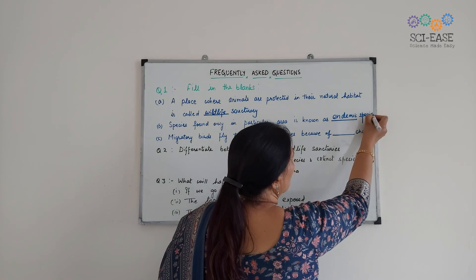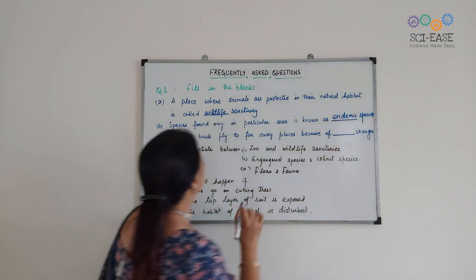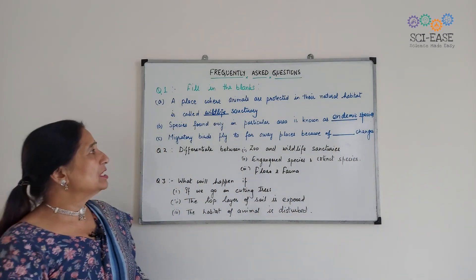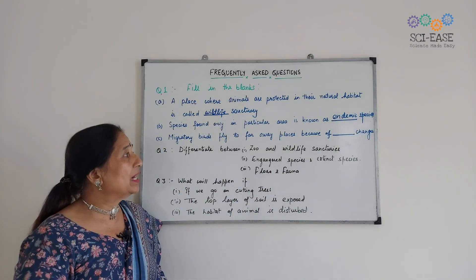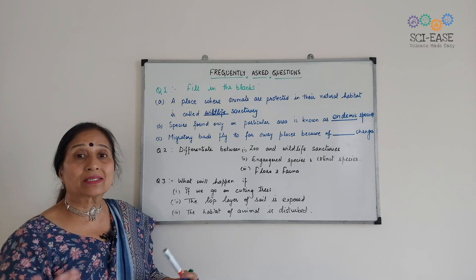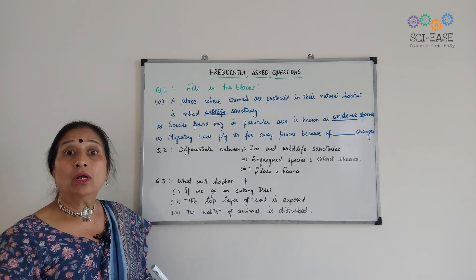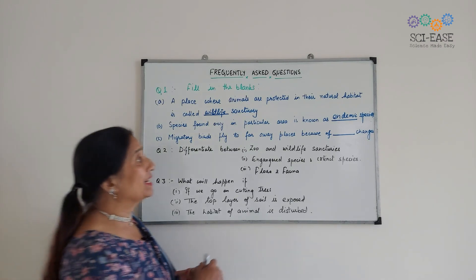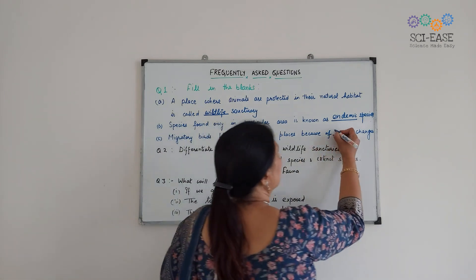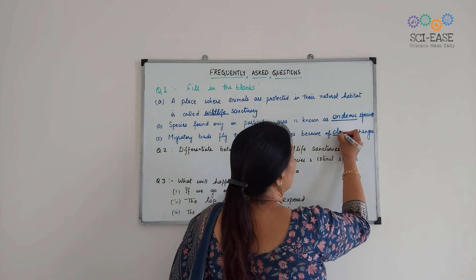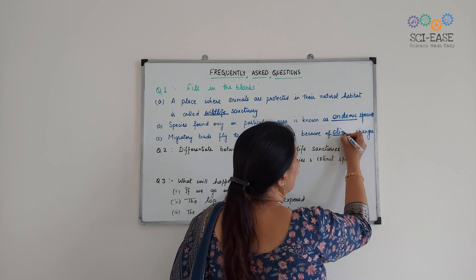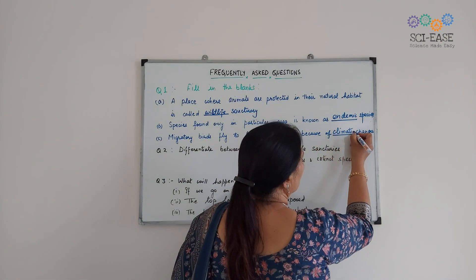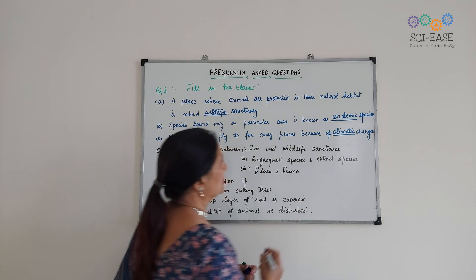Next one — migratory birds fly to far away places. Why do they go to far away places? Because of climatic changes.